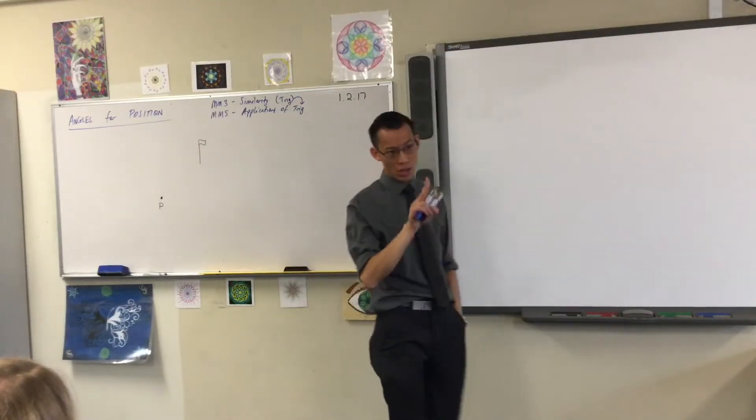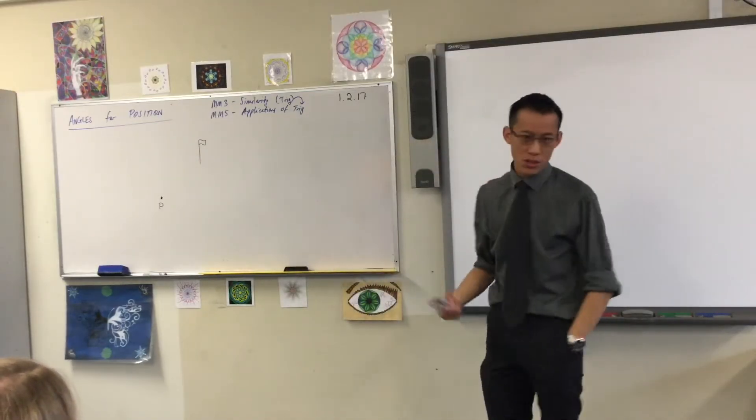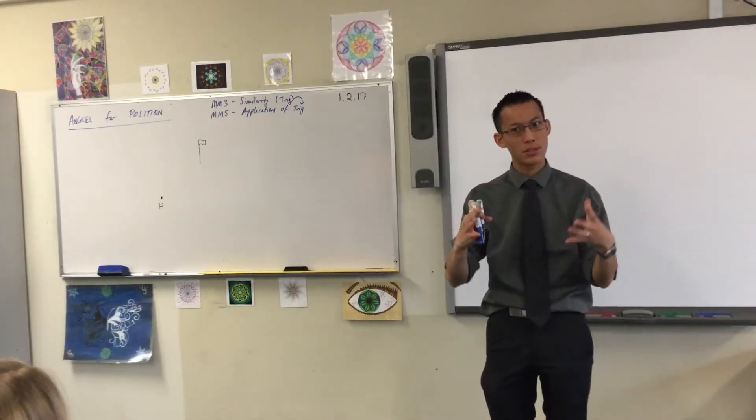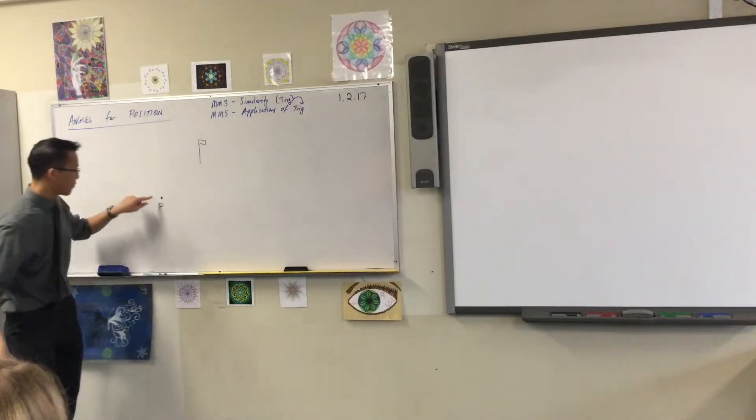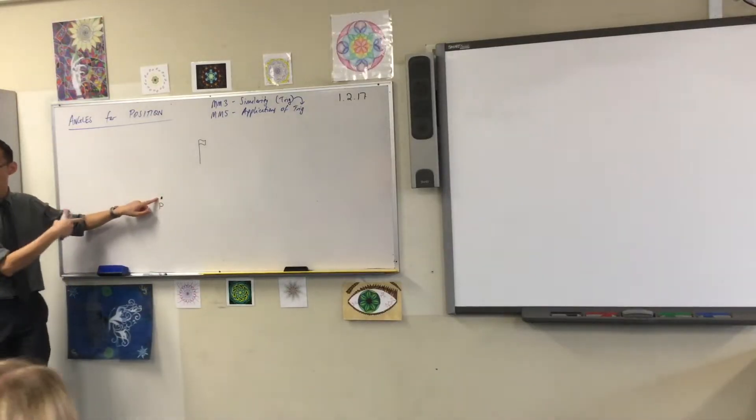So first we're going to focus on angles for position, two different kinds, both of which you've met before but maybe you haven't heard of them together. The first thing is when you got something like this, this is P for point, this is where we are.